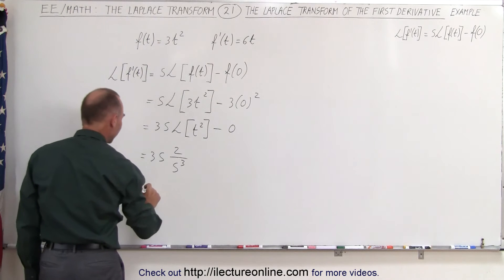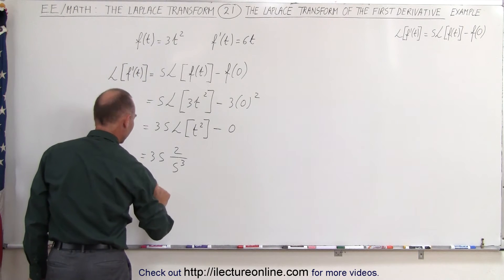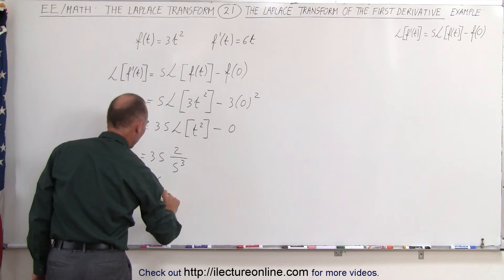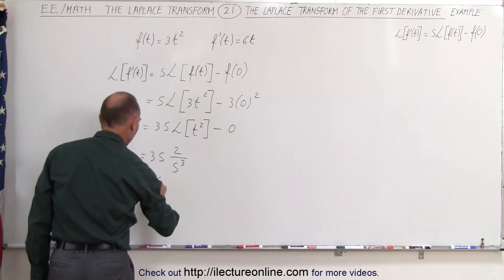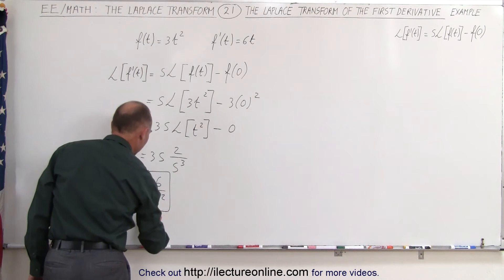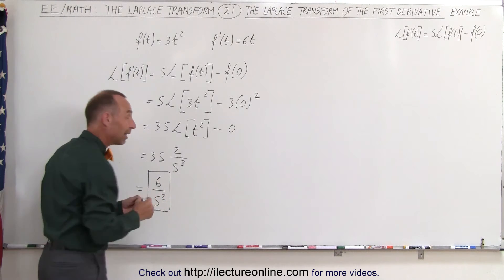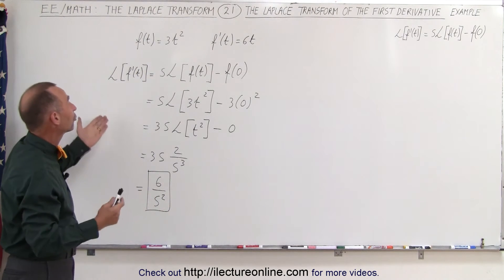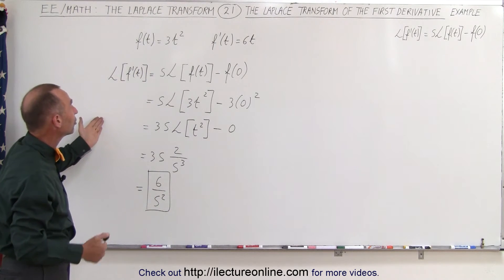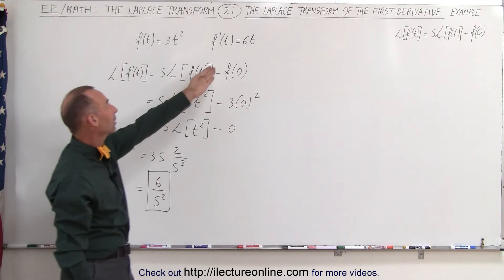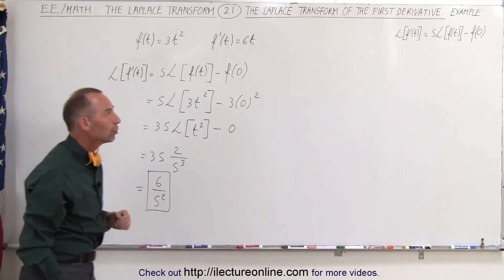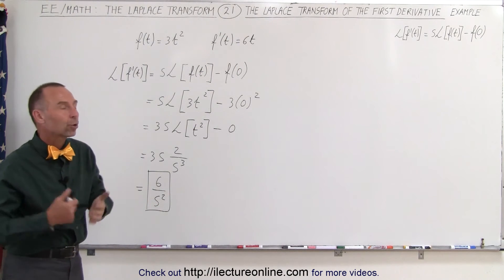So this becomes 3 times s times 2 over s to the third power, minus 0. And simplifying this gives us 6 over s squared. So this is the Laplace transform of the first derivative of the function, which is the Laplace transform of 6t using the equation.